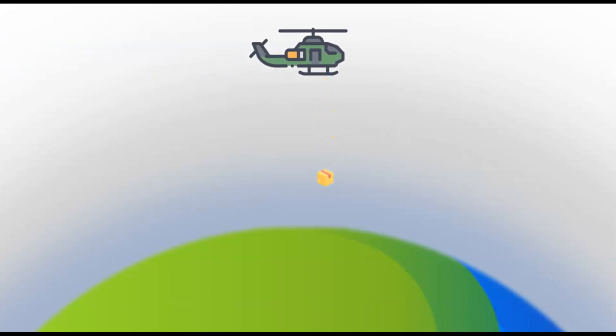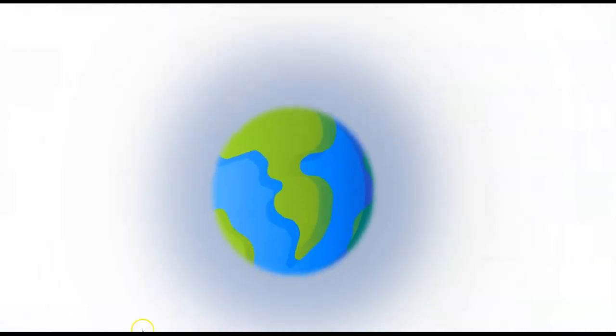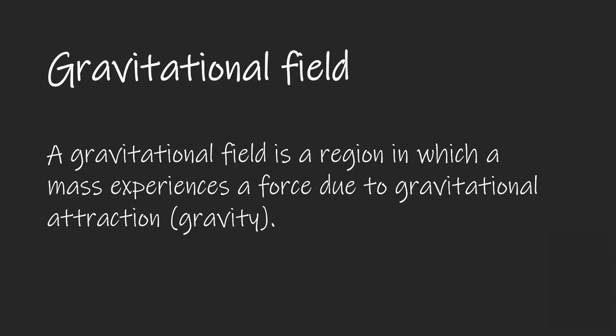Objects fall to the ground because it is pulled by the Earth's gravity. This force of gravity is experienced by any object near the planet. The region surrounding a planet where gravity is experienced is called the gravitational field. We define a gravitational field to be a region in which a mass experiences a force due to gravitational attraction.